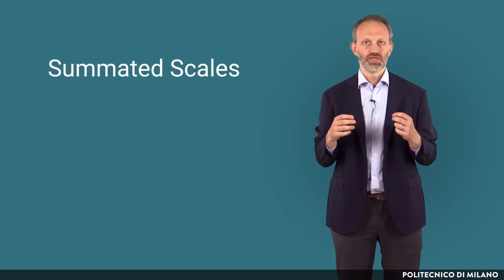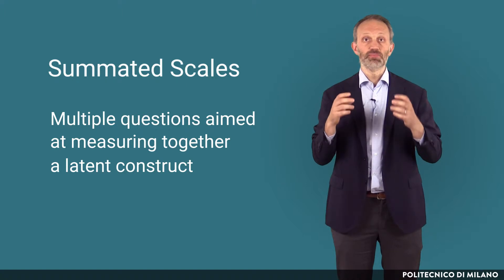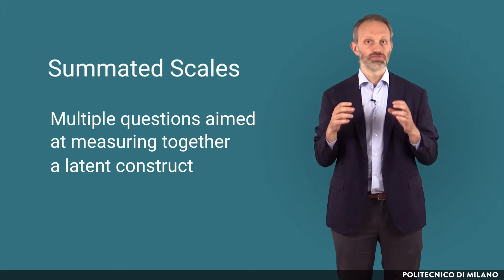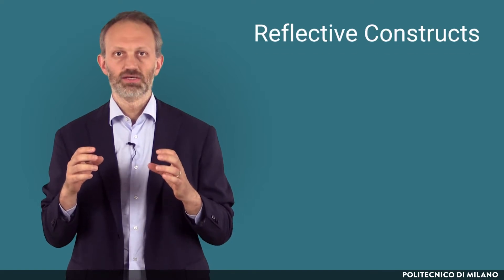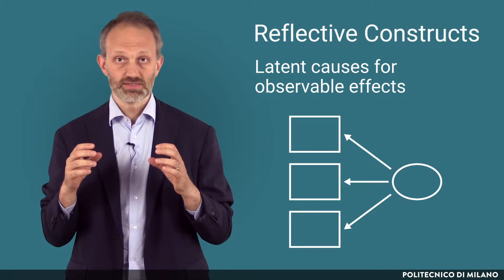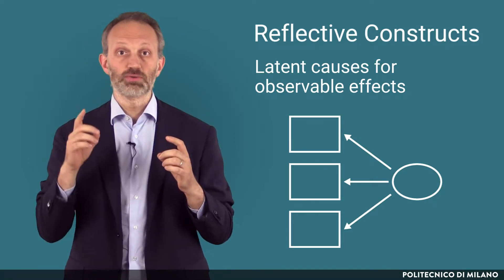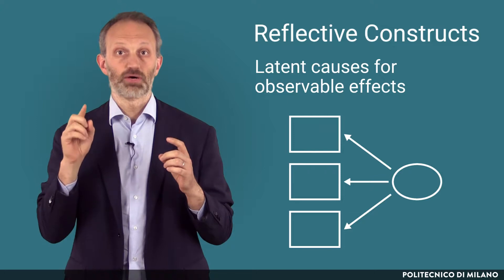In the lecture on questionnaire design we have seen the concept of summated scales, which are multiple questions aimed at measuring together a latent construct. Let's focus in particular on reflective constructs, which we have defined as latent causes — the ellipsis in the figure — for observable effects — the rectangular boxes.